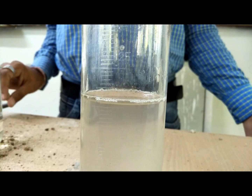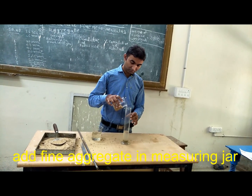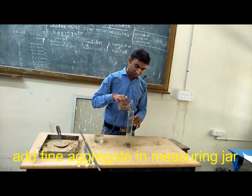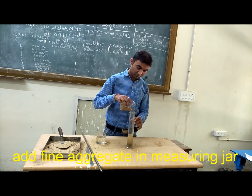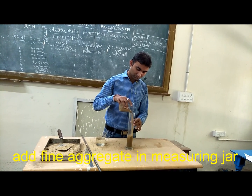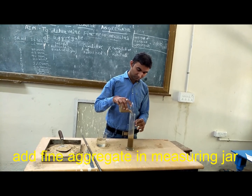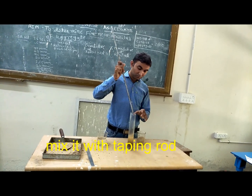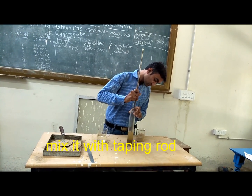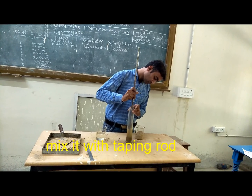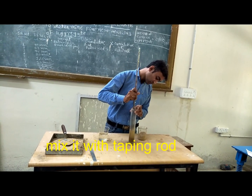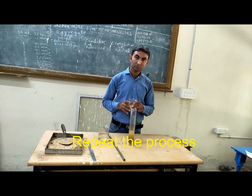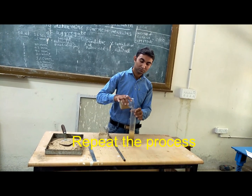After taking 100 ml of water, add the fine aggregate into the jar. After adding the fine aggregate, mix it with the tapping rod. Then add the fine aggregate in 3 layers and repeat the process.